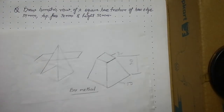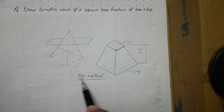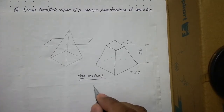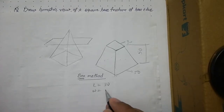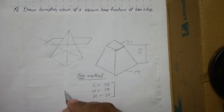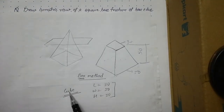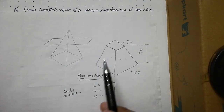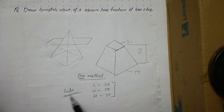In the box method, we assume the solid is enclosed inside a box. To enclose this frustum, the box length equals 50, width equals 50, and height equals 50 — all three dimensions are the same, so we need to draw a cube. First we draw the isometric of the cube, and inside it we will generate the isometric of the frustum.